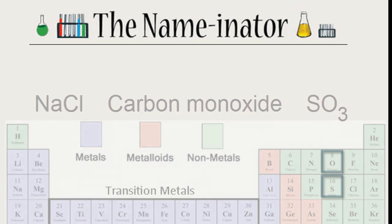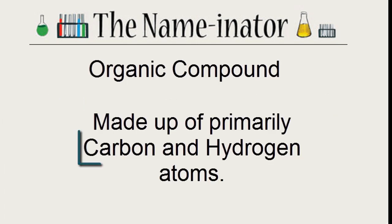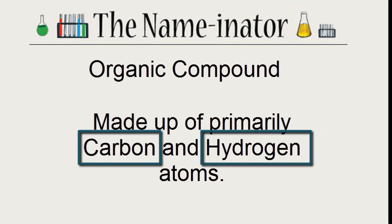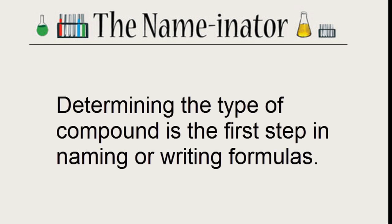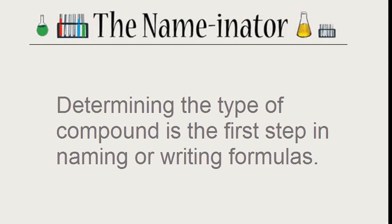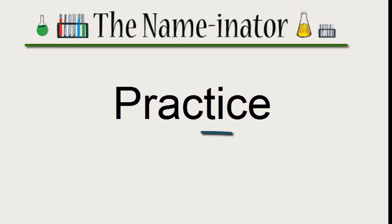One last type of compound is the organic compound — that's when you have primarily carbons and hydrogens making up the compound. It's a special type of molecular compound. Now you can tell what type of compound you have, and that's the first step to naming or writing the formula for chemical compounds. The next step is to get lots of practice using the rules specific to each type of compound. You can get that practice on my website using the Naminator.